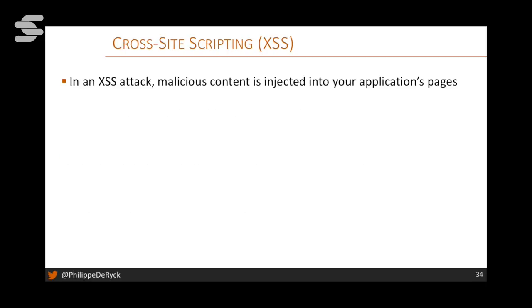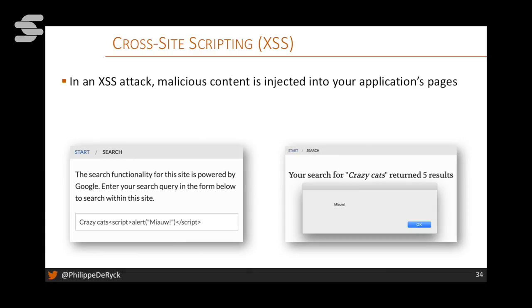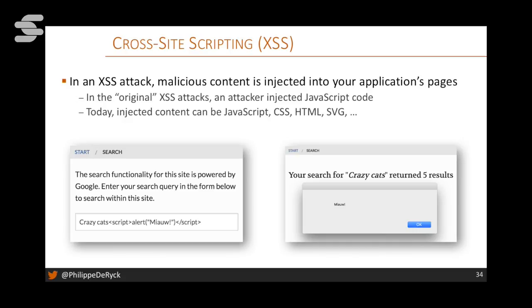In a cross-site scripting attack: if you have a search box and somebody enters a search term and a script tag, and your website renders it such that the script is executed in your context, you're in trouble. You're processing user input in a way that if there's a malicious script, it will execute. Today you can inject CSS attacks, SVG attacks, form fields to trick users into entering sensitive information — not just JavaScript code. Cross-site scripting is not limited to stealing cookies.